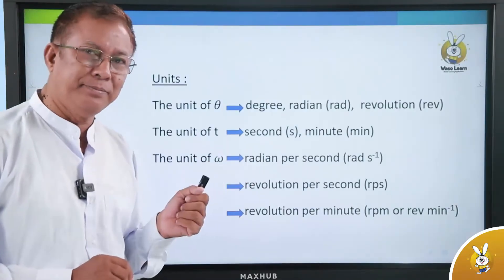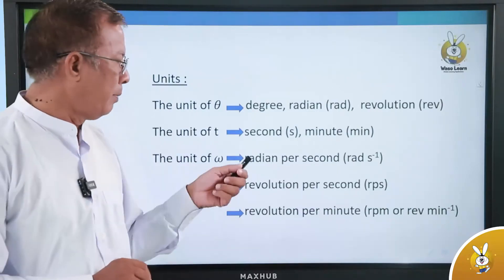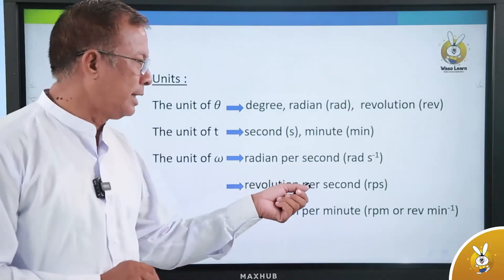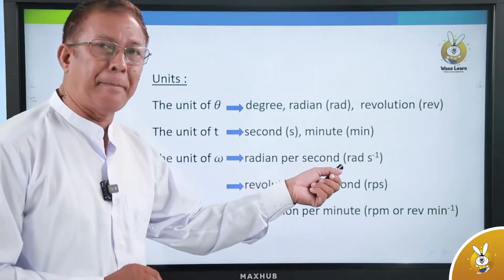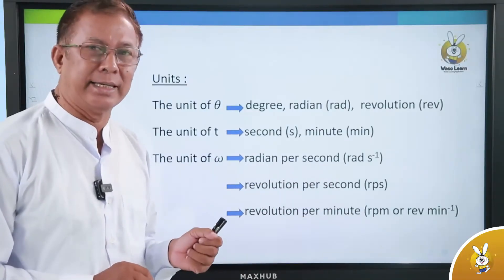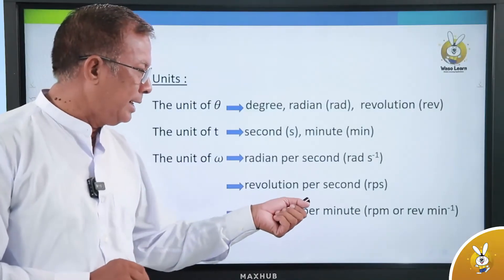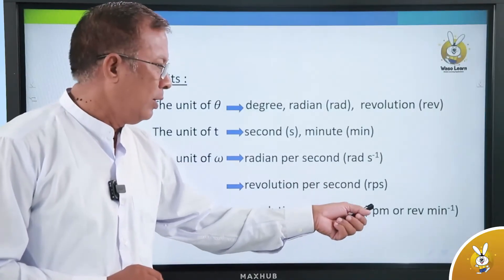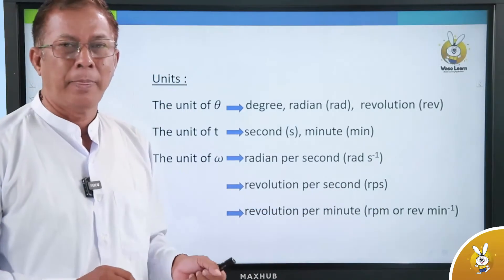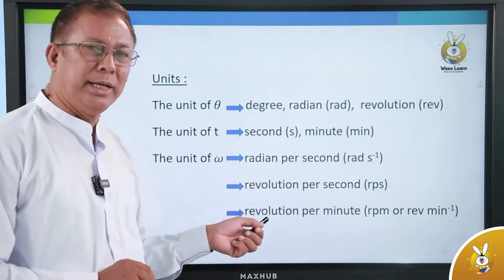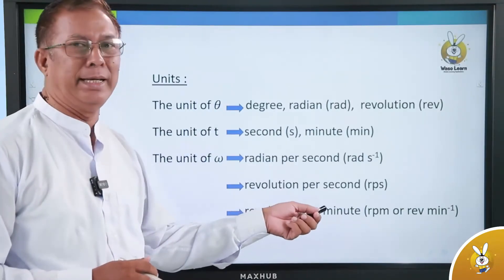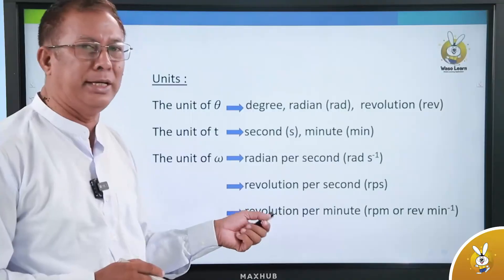Radian per second — written as rad/s or radian times second to the power minus one. Revolution per second — RPS, or revolution per second. Revolution per minute — RPM, or revolution per minute to the power minus one.